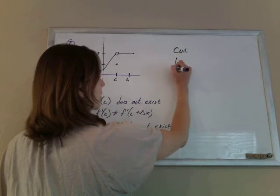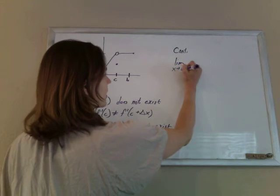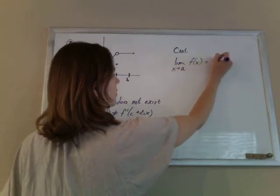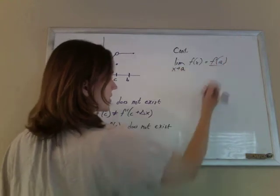The algebraic or calculus idea of being continuous is that the limit has to equal the value of the function. So the limit as x goes to a has to equal the value of the function at a.